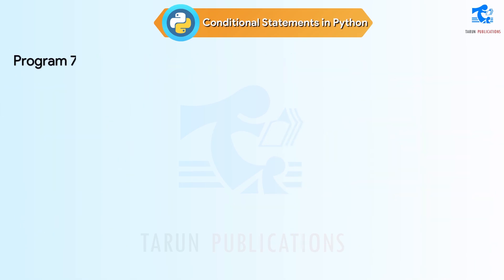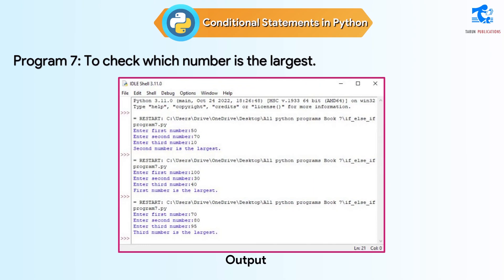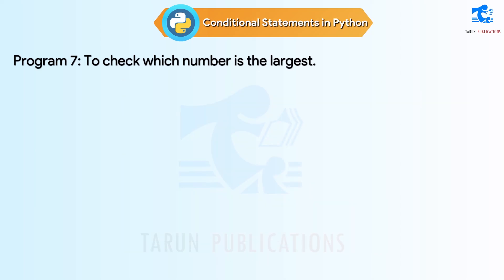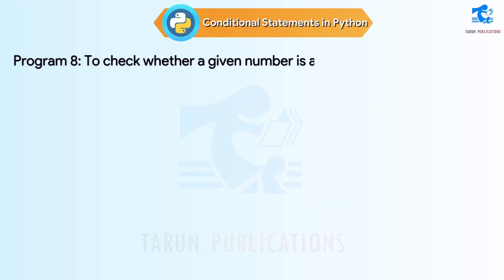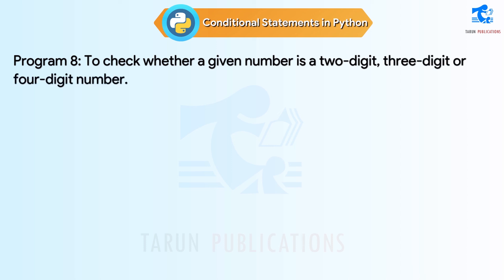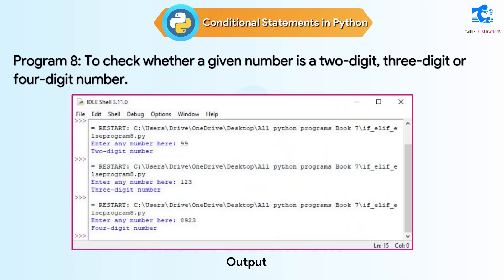Program 7: To check which number is the largest — shown with code and output. Program 8: To check whether a given number is a 2-digit, 3-digit, or 4-digit number — shown with code and output.